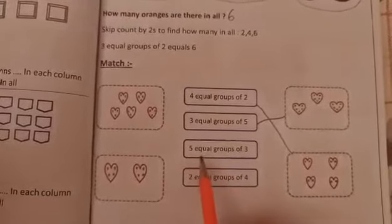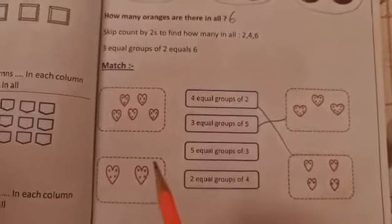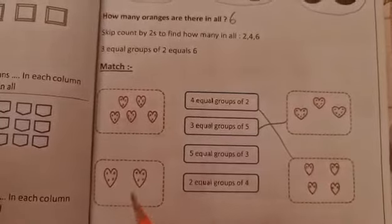The other one, five equal groups of three. This is five groups of three dots each.